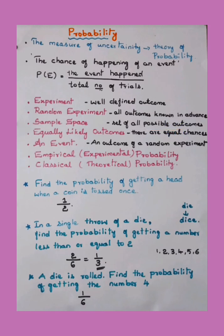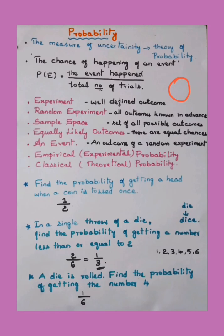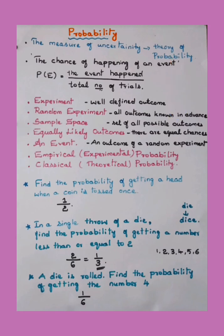Equally likely outcomes means there are equal chances. In the case of tossing a coin, you have either head or tail — you will get head once or tail once as an outcome, so that is an equally likely outcome. The term event means an outcome of a random experiment.